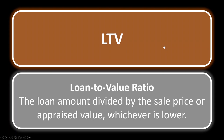LTV — loan-to-value ratio. This is the loan amount divided by the sales price or the appraised value, whichever is lower. Conventional loans are often at 80% LTV, meaning the loan is 80% of the lower of the sales price or appraised value, and usually PMI is not required at that level. For example, if the purchase price and appraised value are both $100,000 and the loan is 80% LTV, the loan would be $80,000 — $80,000 divided by $100,000 equals 80%.